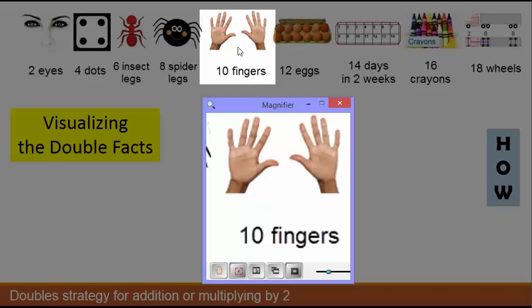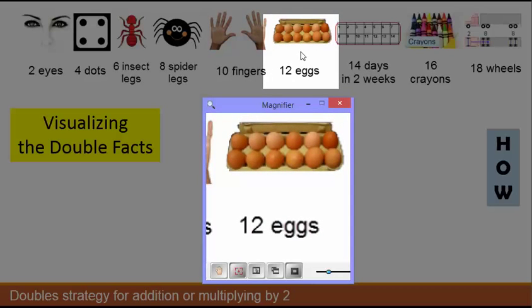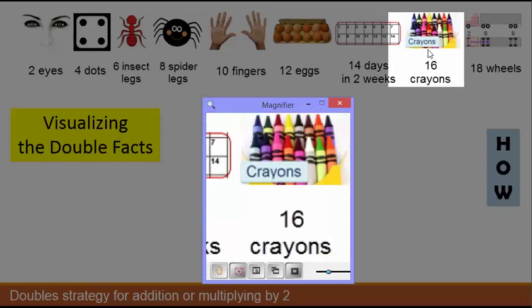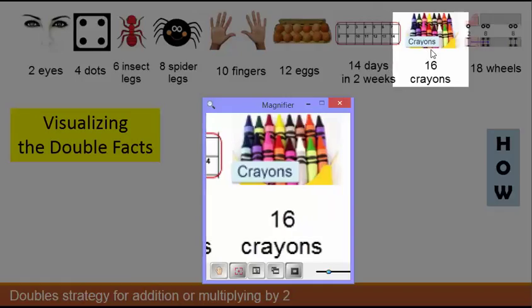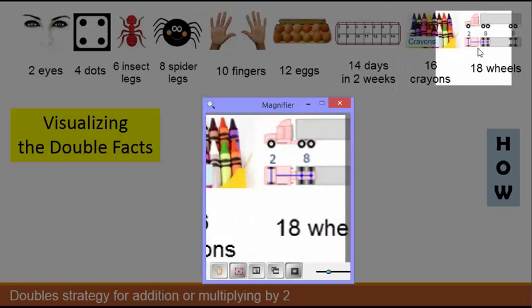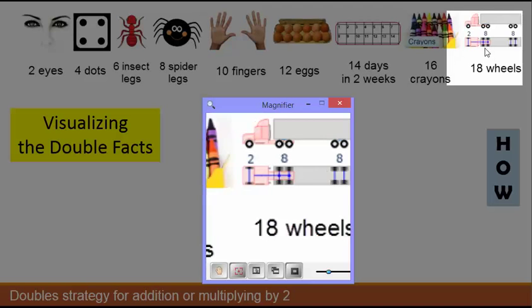Ten fingers is a good way to visualize 5 times 2. A dozen eggs is 2 times 6. There are 14 days in 2 weeks. 16 is a common number of crayons to buy, 2 rows of 8 crayons. And an 18 wheeler has 9 wheels on each side of the truck.